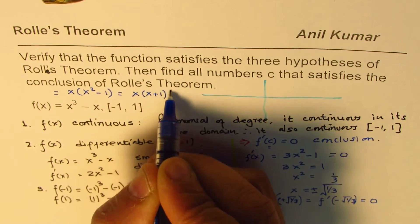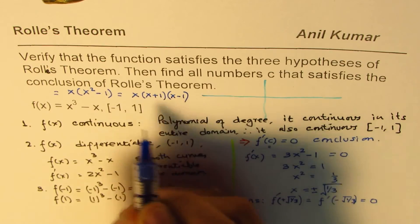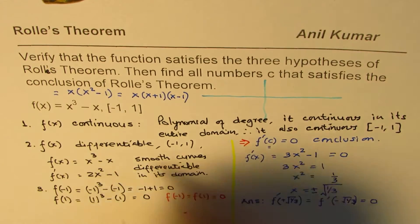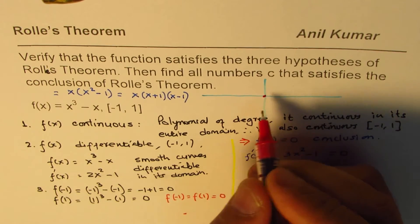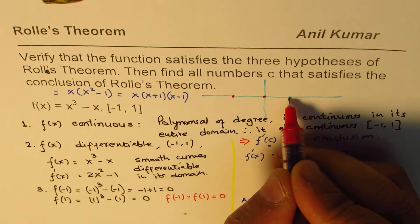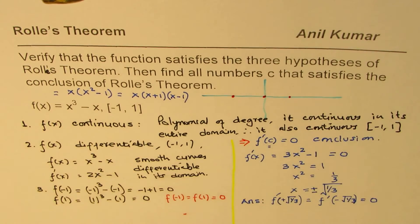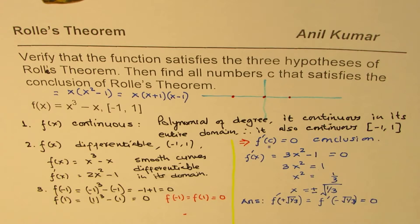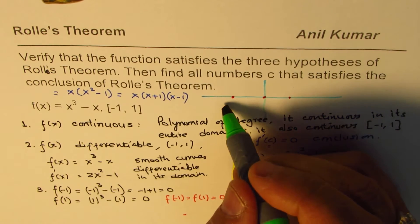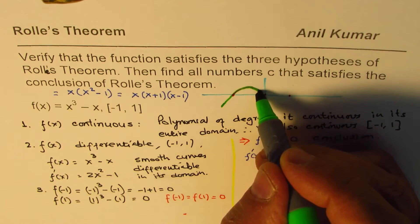So we have three zeros: one is at 0, the other one is at -1, and then one we have at +1. Positive leading coefficient, so right side is up, so the graph will be kind of like this.